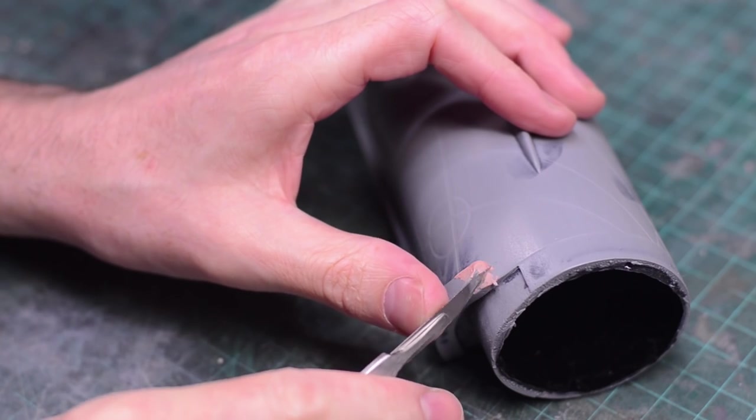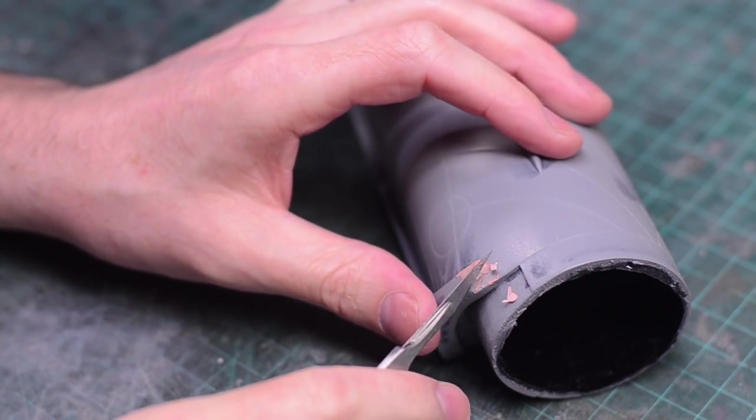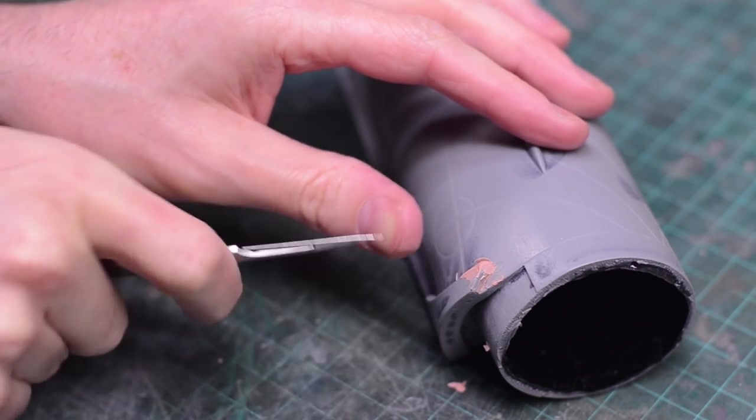Once it's cured a little bit you can trim away any extra with a knife or a chisel to get it roughly to the shape that you'll need.